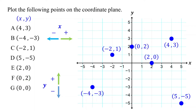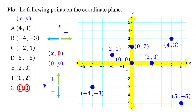In general, if the y-coordinate is 0, the point lies on the x-axis. If the x-coordinate is 0, the point lies on the y-axis. If both the x and y-coordinates are 0, just as in point G, the point lies at the origin.